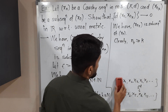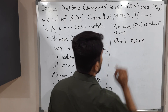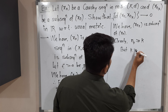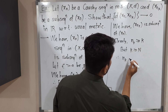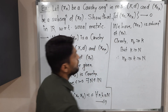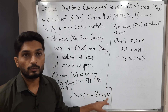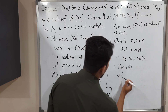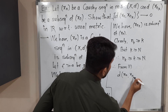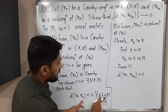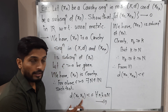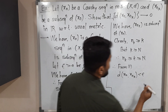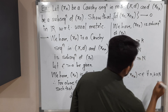Since xnk is a subsequence of xn, we clearly have nk ≥ k. But we also have k ≥ N (capital N). Therefore, nk ≥ k and k ≥ N, which means nk ≥ N as well. So the same inequality from statement (1) holds for nk: d(xn, xnk) < epsilon for all nk ≥ N.